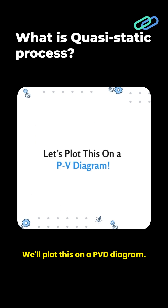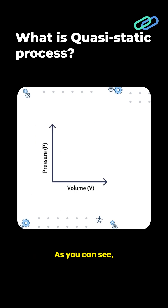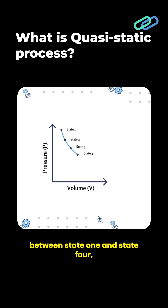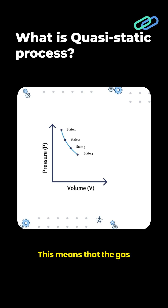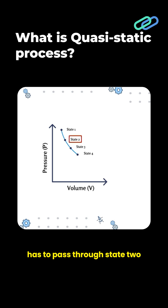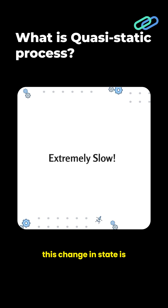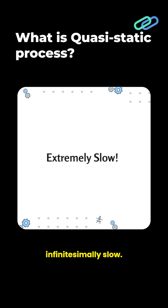We'll plot this on a PV diagram. As you can see, there are two intermediate states between state 1 and state 4, namely state 2 and state 3. This means the gas under compression has to pass through states 2 and 3 to reach state 4. According to the theory of quasi-static processes, this change in state is infinitesimally slow.